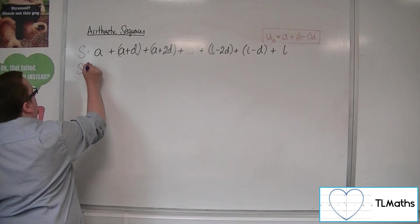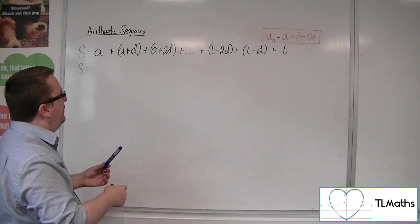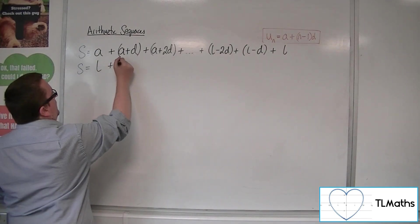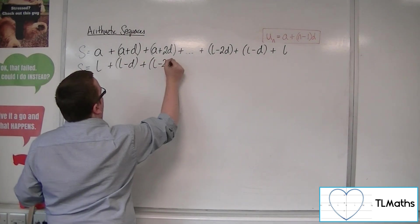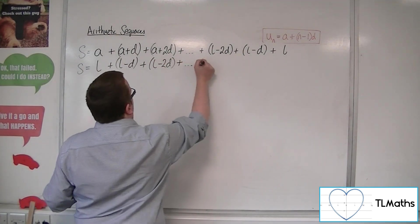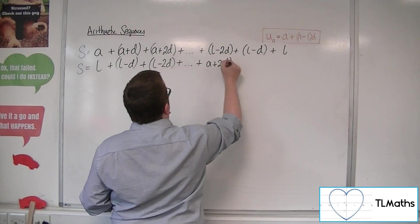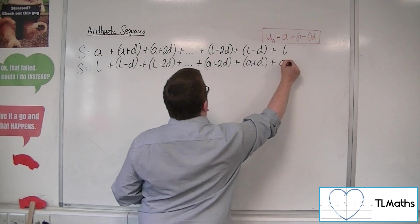and then rewrite the same series but underneath in the opposite order, we can have l there, then we'd have l - d, then l - 2d, and then here we would have a + 2d, then a + d, then a.